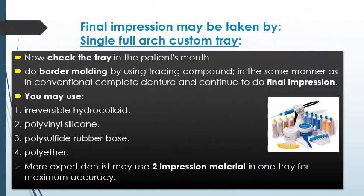Check the tray in the patient's mouth and perform border molding using tracing compound, as usual for the final impression. Impression materials that can be used include irreversible hydrocolloid (alginate), polyvinylsiloxane, silicone, polysulfide, and polyether. More experienced dentists may use two impression materials in one tray for maximum accuracy — that is, heavy body and light body in the same tray.